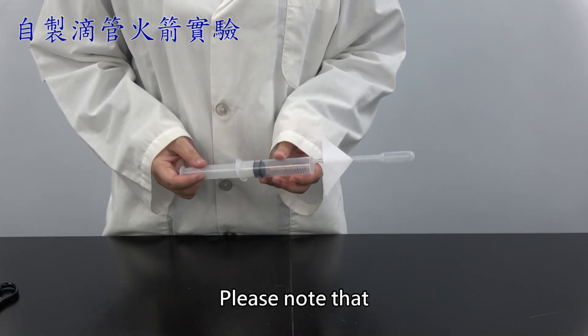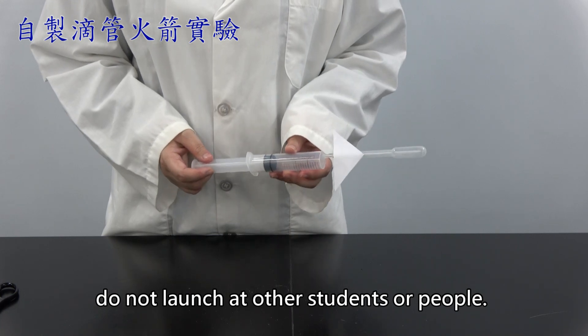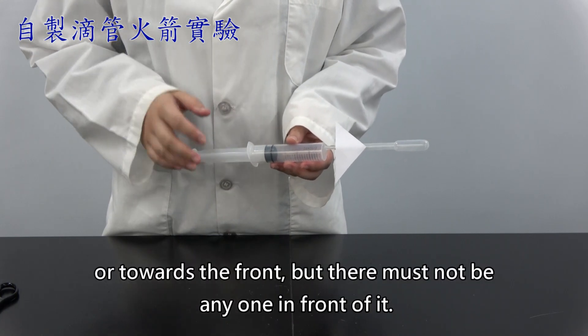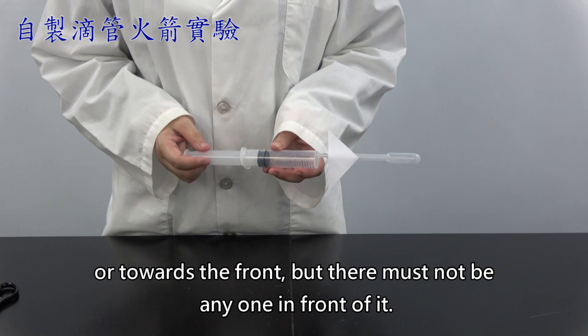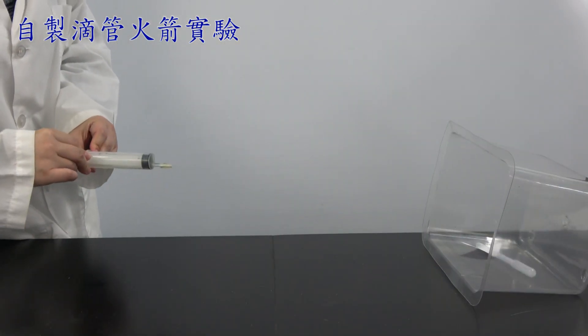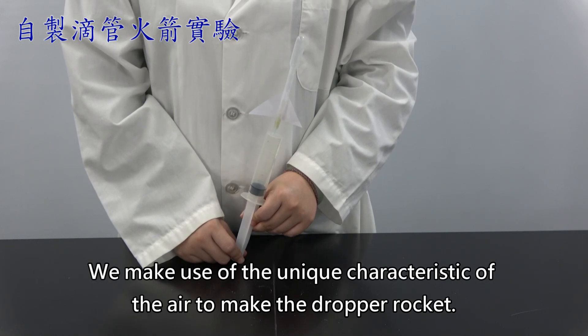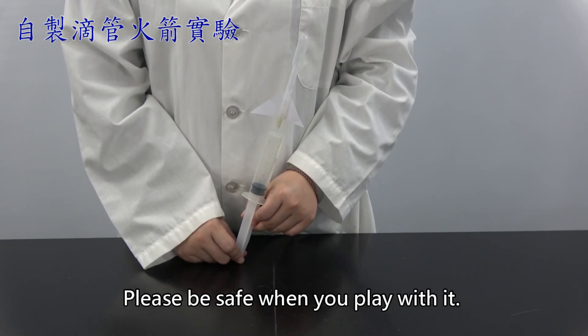Please note that, do not launch at another students or people. We can aim towards the sky or towards the front, but there must not be anyone in front of it. We make use the unique characteristic of the air to make the dropper rocket. Please be safe when you play with it.